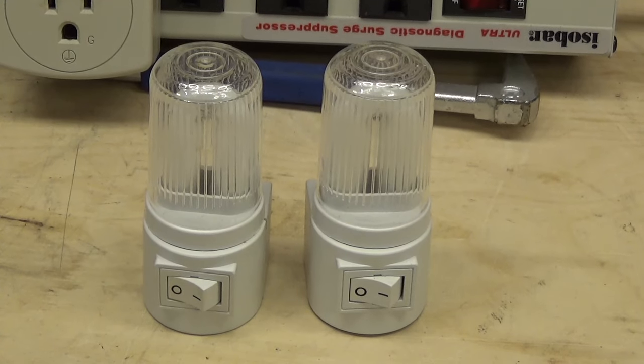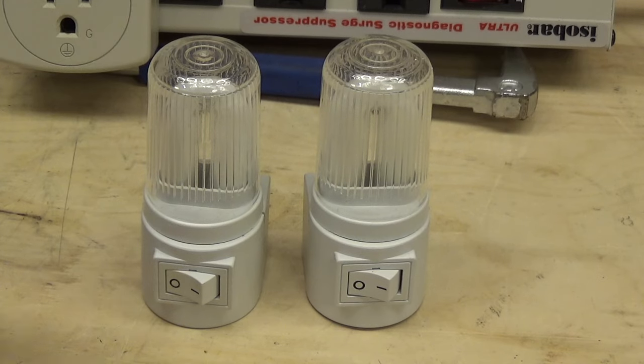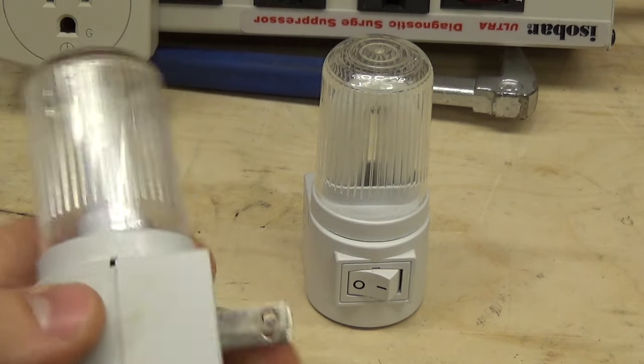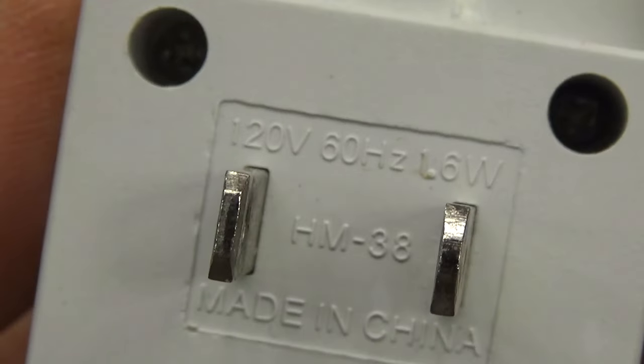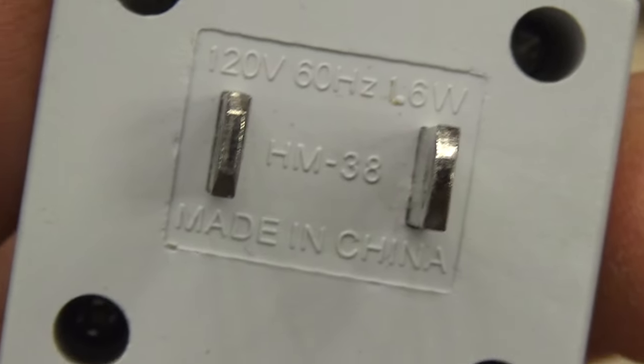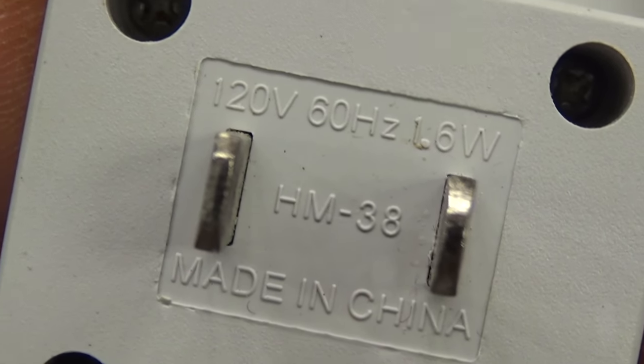Here is a pair of fluorescent night lights. These are 1.6 watt fluorescent night lights. I guess that's probably the model number.